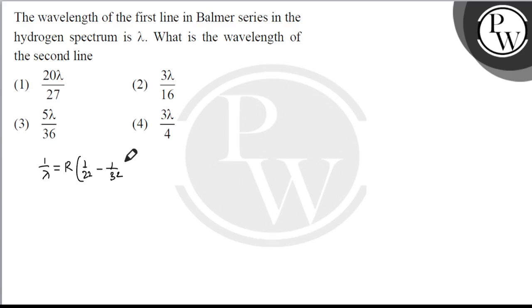So 1 upon lambda equals R into 1 upon 4 minus 1 upon 9, which is equal to R into 5 by 36. Therefore lambda is equal to 36 upon 5R.